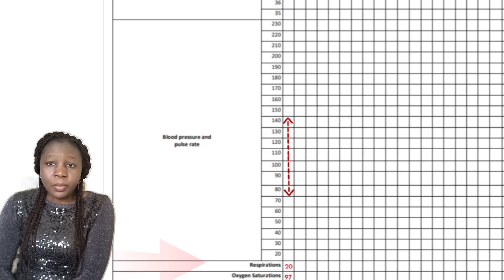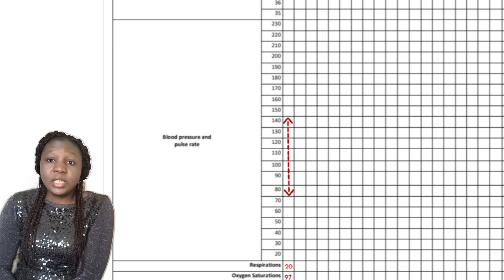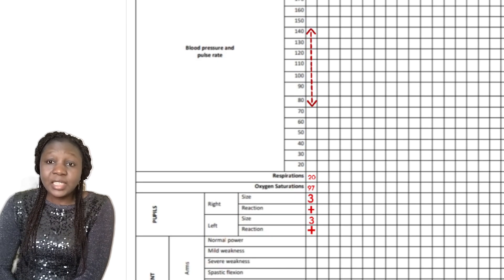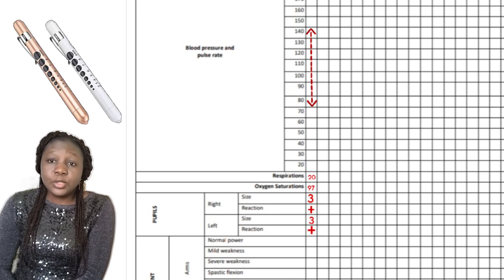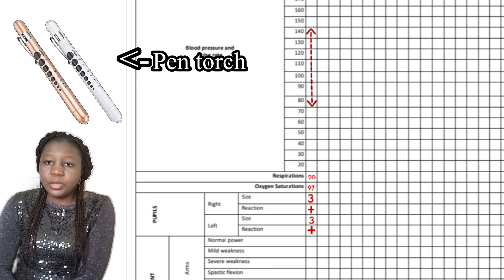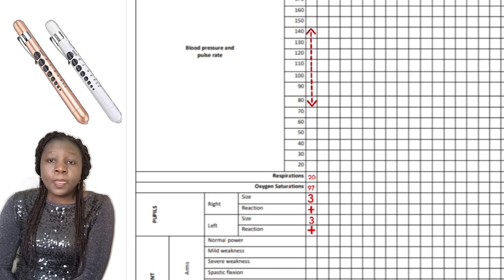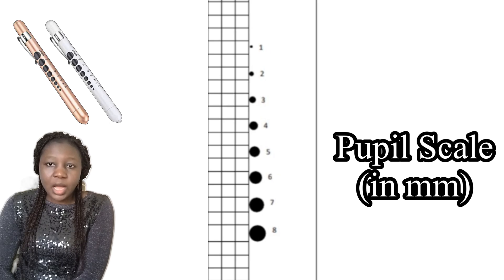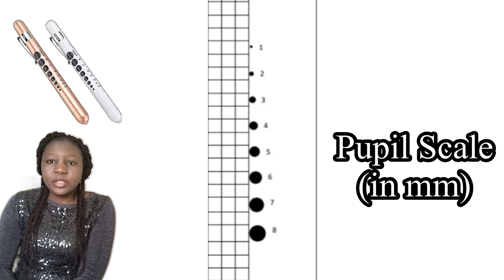For respiration, if it is 20 breaths per minute, you just write 20 in the box in front of respiration. Next you want to be checking for pupil size and reaction to light. For this part you will use the pen torch, shining the light into your patient's eye. There are circles beside the chart which you can use to gauge pupil size, or you can use the circles on your pen torch.